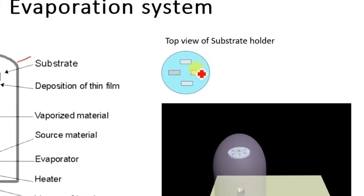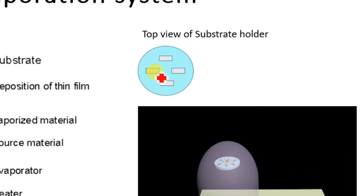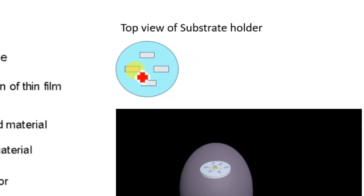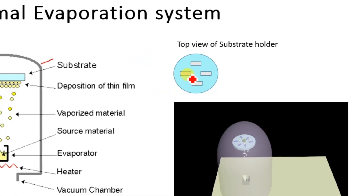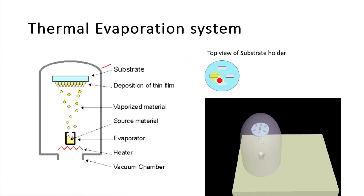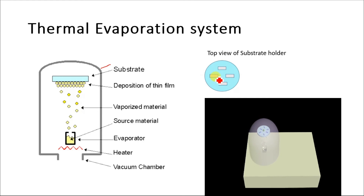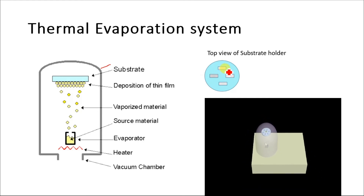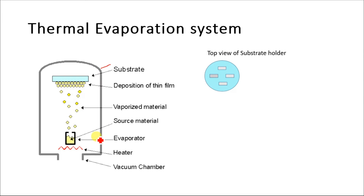This is the substrate holder. Here you can see the top view of the substrate holder with the silicon wafers used for deposition of thin films. You can use many types of substrates. A vacuum pump is connected to this chamber. The first thing you need to do before evaporating the source material is to remove all the particles and create a high vacuum inside the chamber.